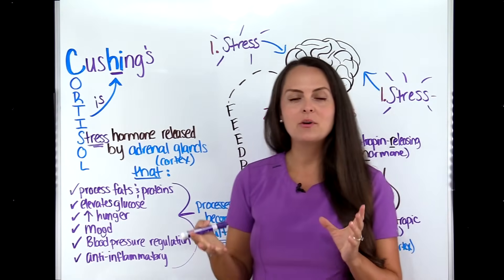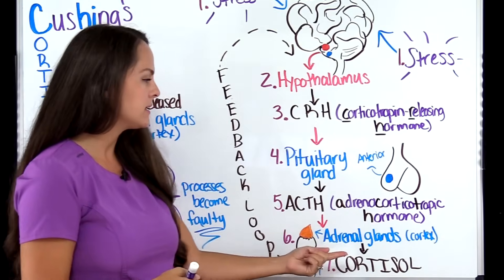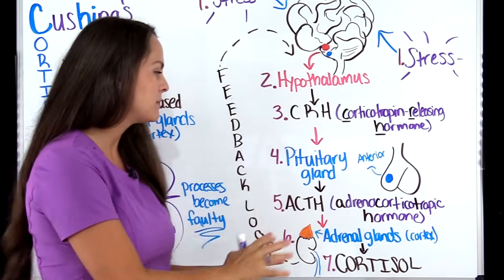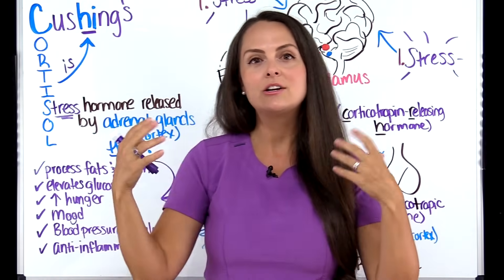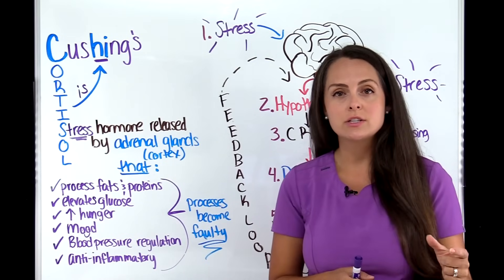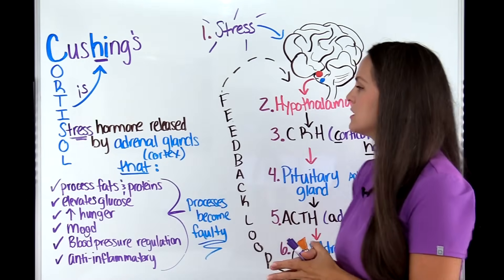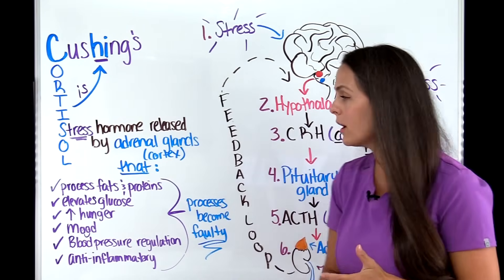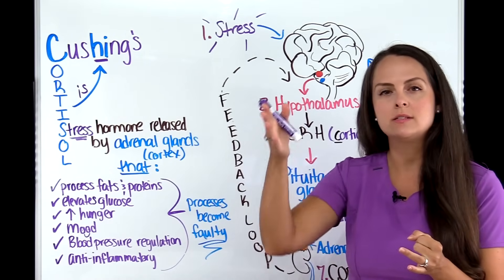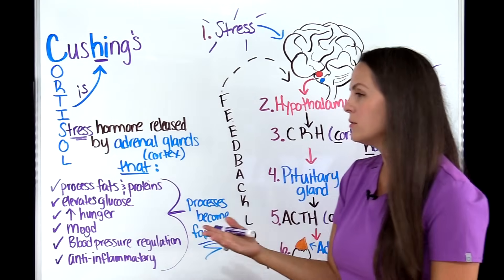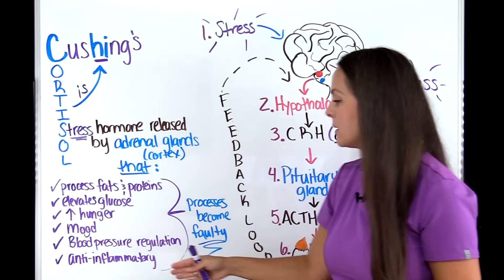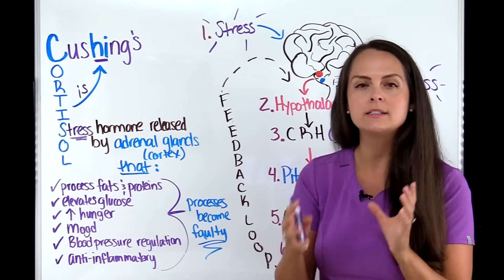Cortisol is a hormone secreted by the adrenal glands, particularly the adrenal cortex, which sit on top of the kidneys as cute little cone-shaped structures. Cortisol is a stress hormone that helps us deal with stress. In small doses for a short period of time it helps process fats and proteins, elevates glucose, increases hunger, aids tissue repair, improves focus and alertness, regulates blood pressure and cardiac output, and has anti-inflammatory properties to suppress the immune system during stressful situations.